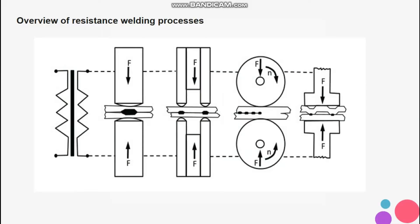Resistance spot welding processes are mainly used in the automotive industry and supplier industry. The figures show the following resistance spot welding processes from left to right: one, resistance spot welding; two, projection welding; three, single link; four, capacitor discharge welding.